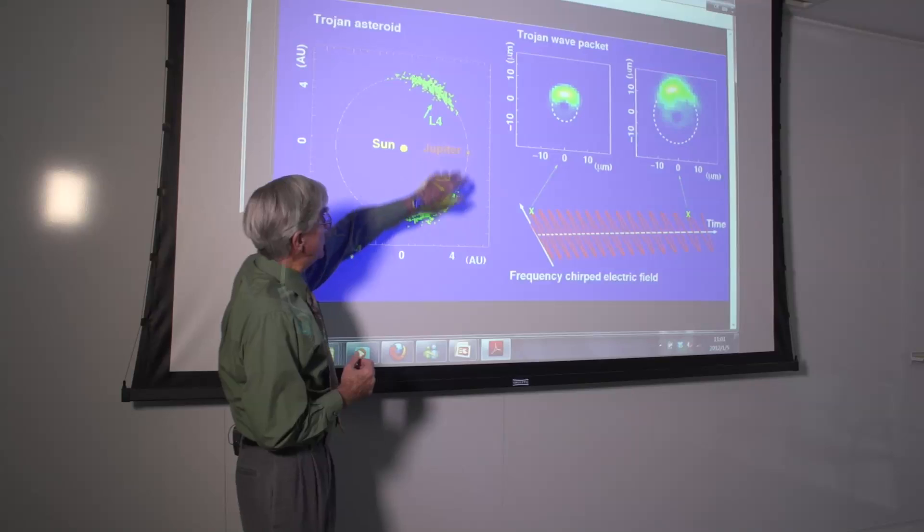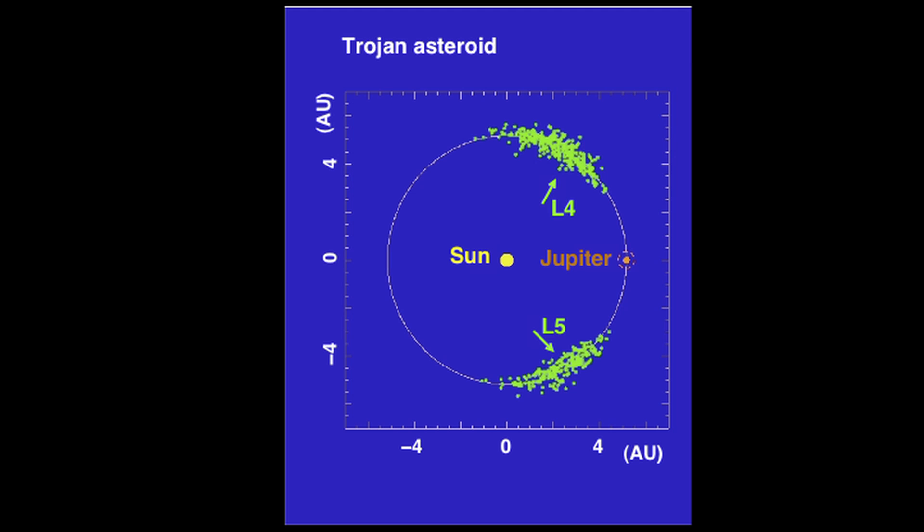The Trojan asteroids are shown here. They're trapped in the combined gravitational potential of the Sun and Jupiter, and orbit with the planet 60 degrees ahead and 60 degrees behind.